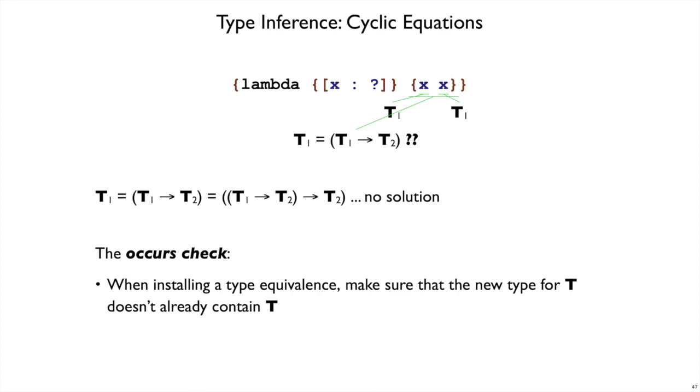The problem here is that you run into trouble whenever you try to set a type variable equal to some other type where that same type variable is nested somewhere inside. It would be fine to say t1 equals t1, but t1 equals t1 arrow something, that's never okay. Or t1 equals arrow t1, that would not be okay either.